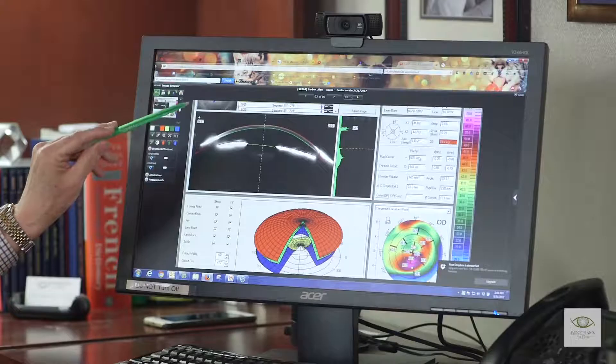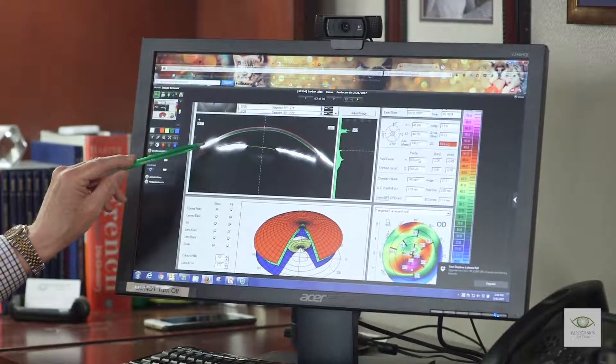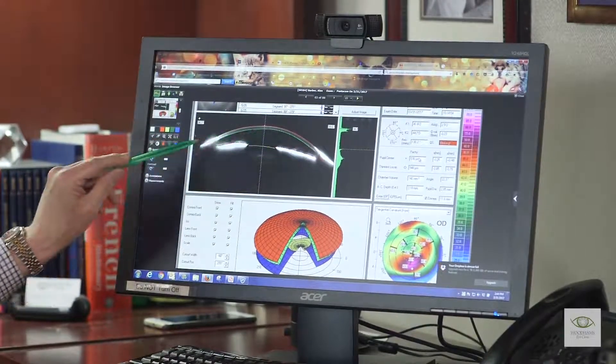Now to get you oriented, here's the upper eyelid, the cornea—that's the part of the eye that the contact lens might sit on.